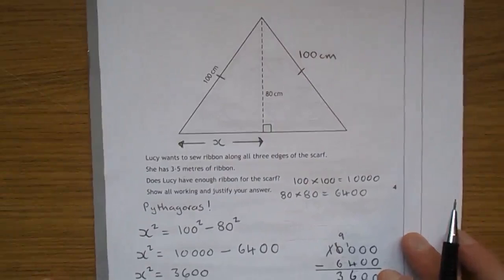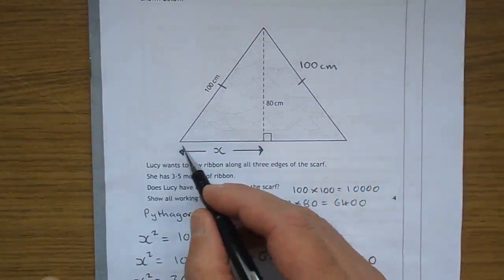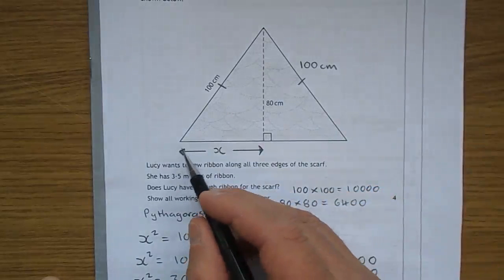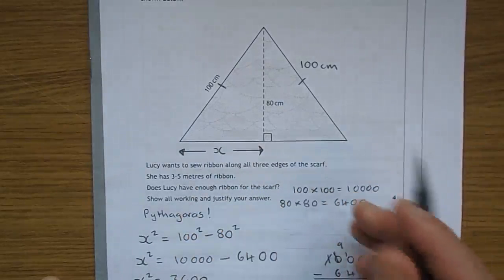And if you've done these before you'll realize that this is all about using Pythagoras to get the length of this base bit here. That's X. We'll double it when we get there to get the length of the base.